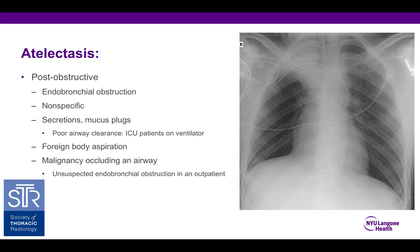Regarding post-obstructive atelectasis, this simply refers to endobronchial obstruction and distal lung collapse. The image on the right shows a yellow arrow indicating an endotracheal tube, and we see a triangular area of opacity at the top of the right hemithorax — that's the atelectatic right upper lobe, presumably related to a mucus plug. Mucus plugging or retained secretions are oftentimes encountered in a hospital setting, especially in patients with poor airway clearance or patients in the ICU on a ventilator. Mucus plugging can occur and can resolve pretty rapidly.